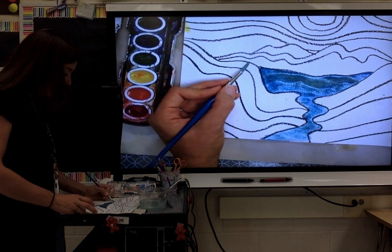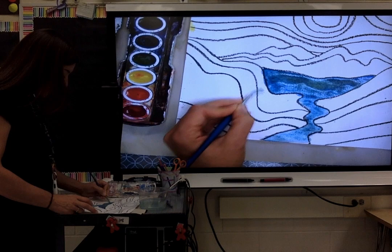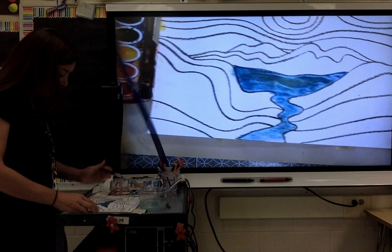Okay, now I might move on to another section. Let's say over here I want to do some purple. Again, I always like to put just even a thin coat of water down because it does help spread the color. Here I'll show you what happens when you don't do the water.